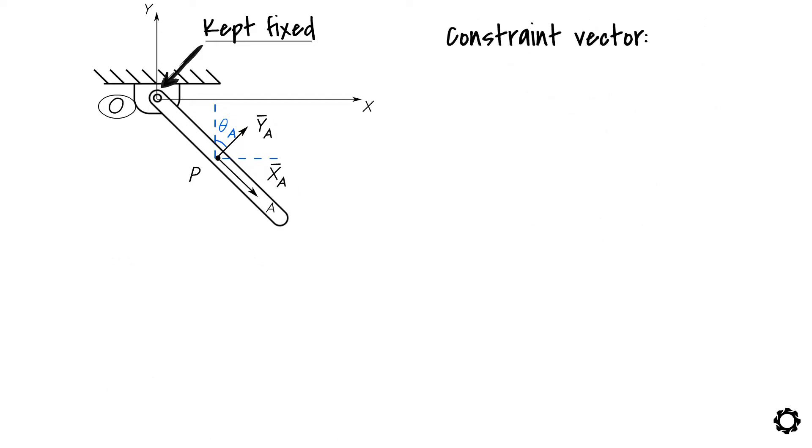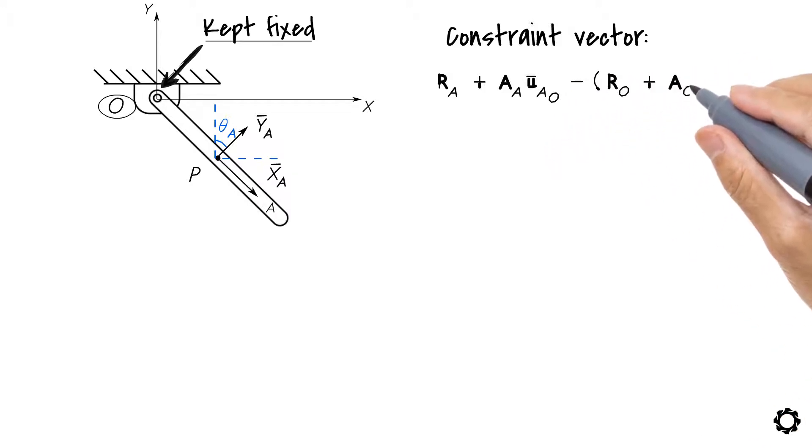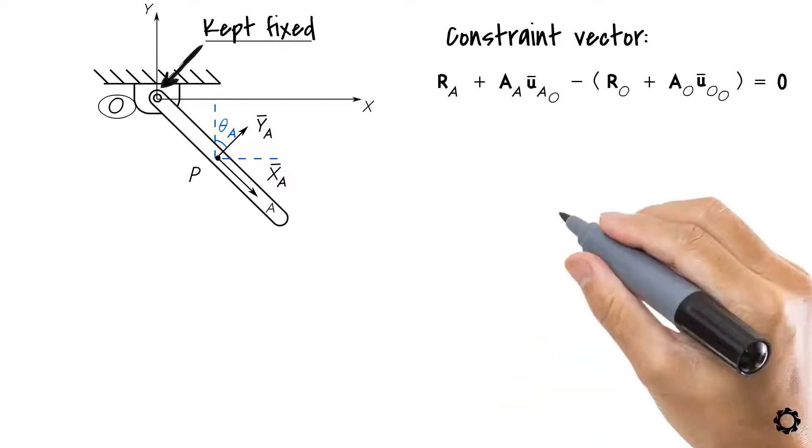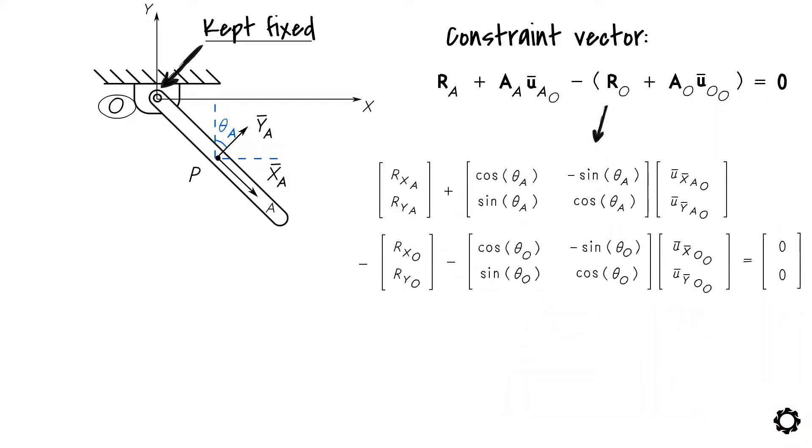Then our constraint vector can be formulated as R_A plus A_A U_bar_AO minus [R_O plus A_O U_bar_OO] equals zero. We can transform this vector equation into... So, let's simplify this.